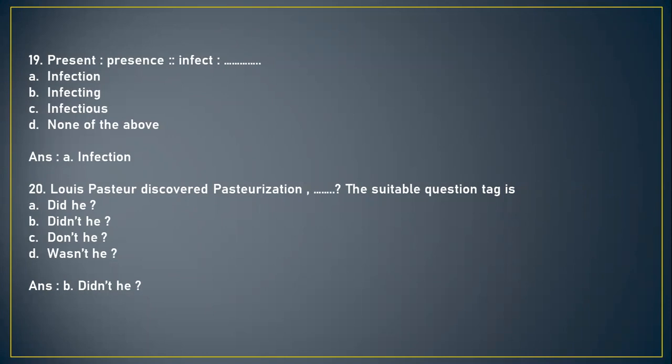Next: Present is to presence as infect is to — you have to look at the first pair and complete the second pair in a similar manner. Is it A) infection, B) infecting, C) infectious, or D) none of the above? The answer is option A, infection. Next question: Louis Pasteur discovered pasteurization — the suitable question tag is: A) did he, B) didn't he, C) don't he, or D) wasn't he. The correct answer is option B, didn't he, because the sentence is positive so we use a negative question tag.